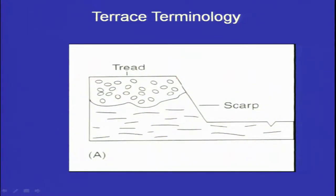This is a simple way of terrace terminology. We have a typical step-like feature — you can call this platform as a tread and this is a scarp. So you have the erosional feature here.